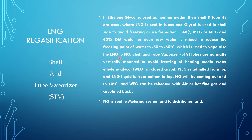WEG is used to vaporize LNG and convert it into natural gas. The STV tubes are normally vertically mounted to avoid freezing of the heating media. WEG is admitted in two ways: the maximum portion flows from top to bottom in counter-current, while a small portion is also sent co-currently to avoid initial ice formation. LNG flows from bottom to top and is converted to natural gas.